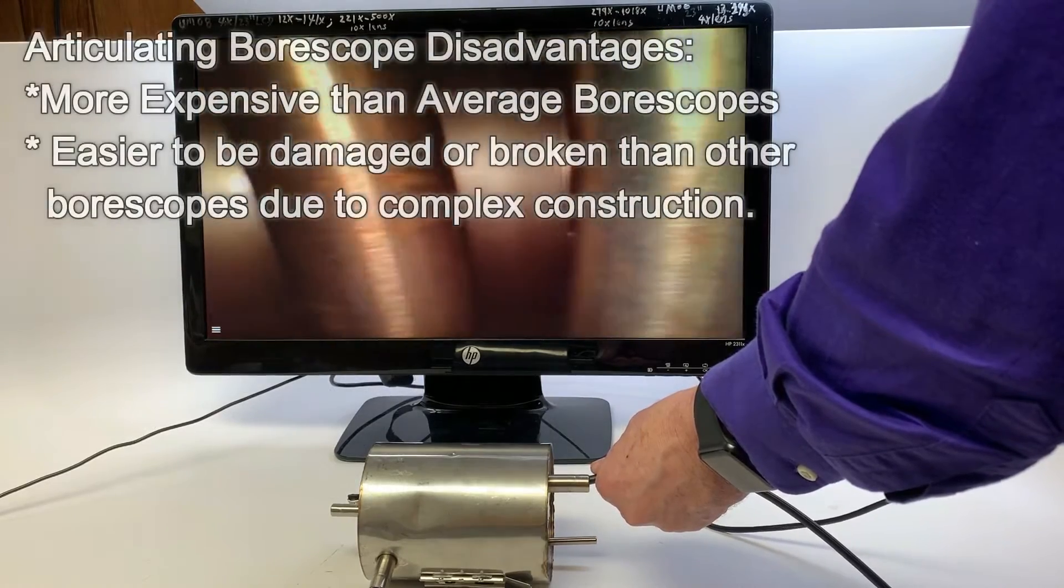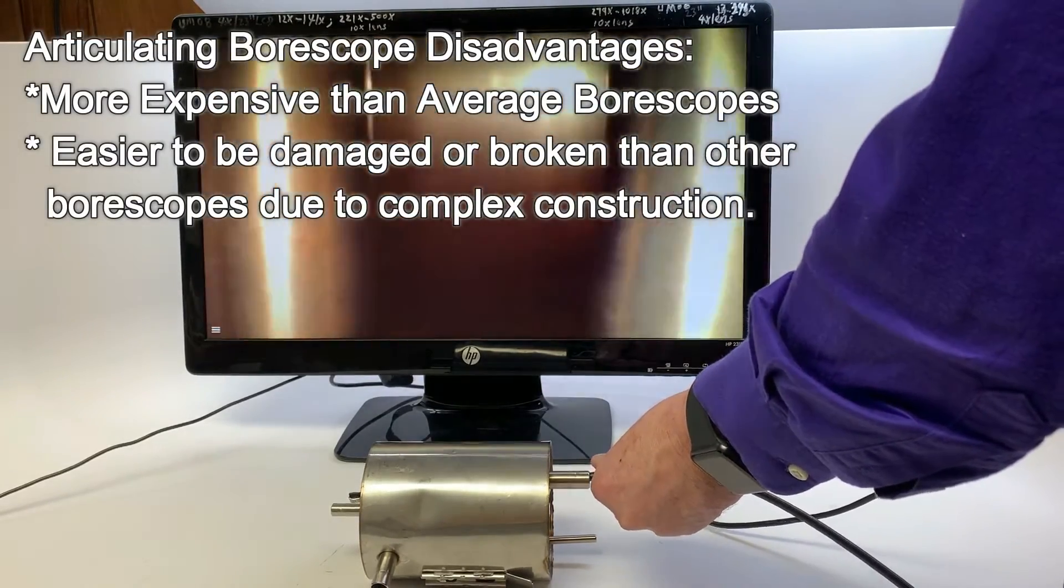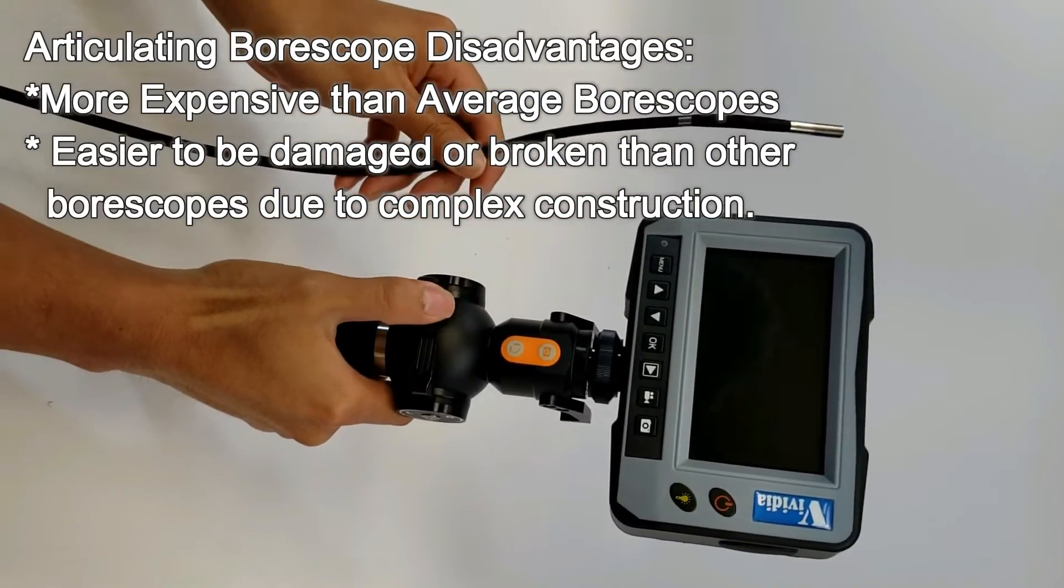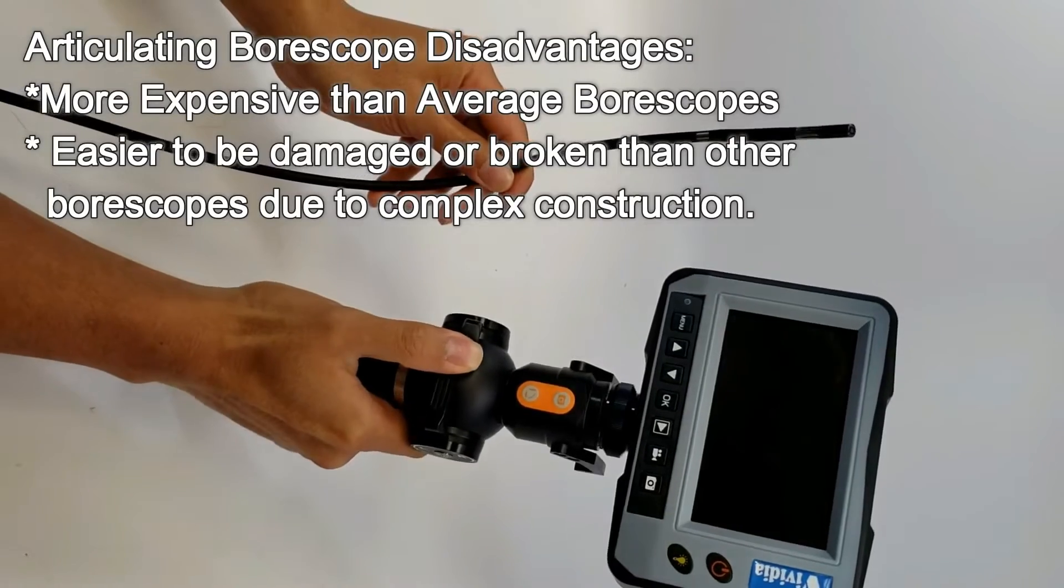Some of the disadvantages of articulating boroscopes is that they normally cost more than other types of boroscopes due to their more complex construction, and they are more susceptible to damage due to the force needed for articulation.